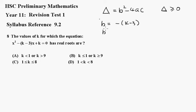So b squared will be equal to, this will change to positive, k minus 3, all squared.